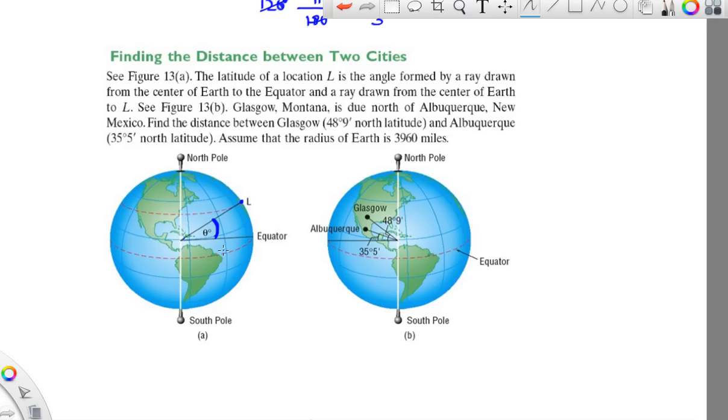Glasgow, Montana is due north of Albuquerque. Due north is directly north. We need to find the distance between Glasgow and Albuquerque given these measurements. So if we know that the small angle here is 35 degrees and 5 minutes, and this one is 48 degrees and 9 minutes, we should be able to find the angle between the two sides.